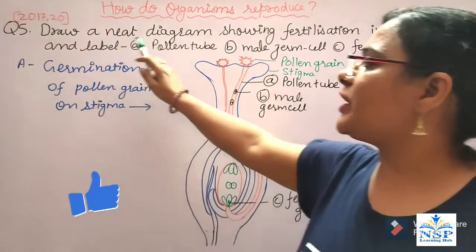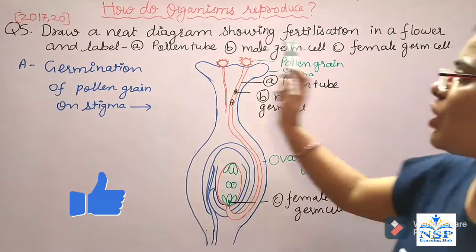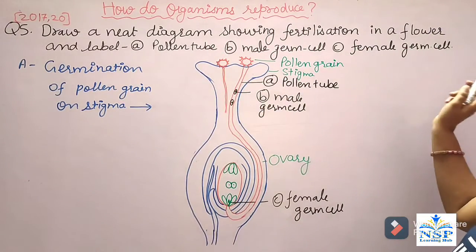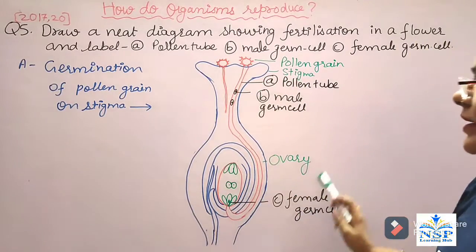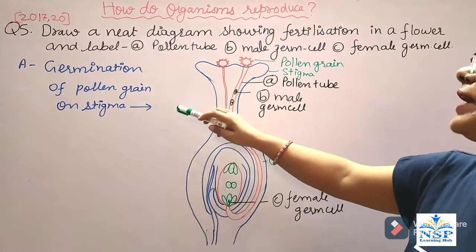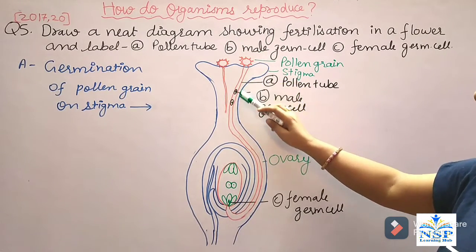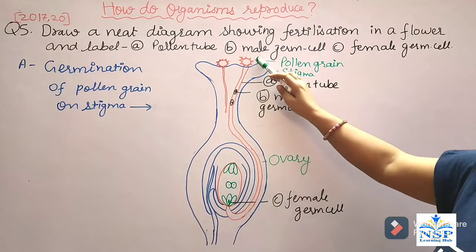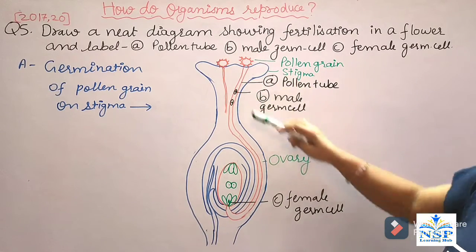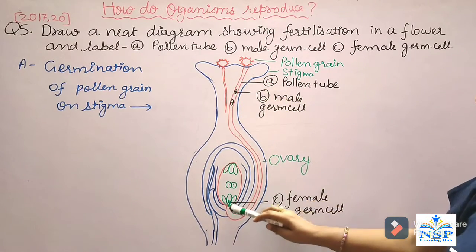The next important question is: draw a neat diagram showing fertilization in a flower and label the pollen tube, male germ cells, and female germ cells. This is the diagram showing germination of a pollen grain on the stigma. When a pollen grain reaches the stigma of a flower, it germinates a pollen tube. A pollen grain contains two male germ cells, which reach the female germ cells with the help of the pollen tube.